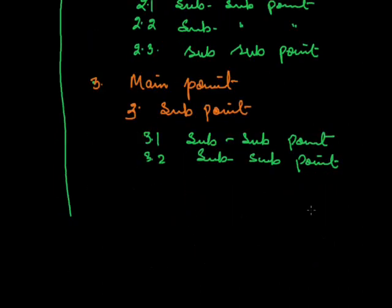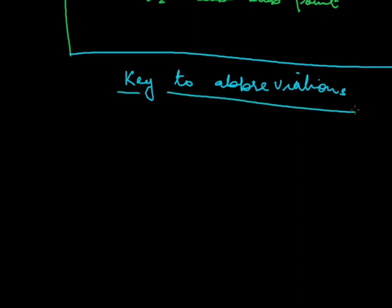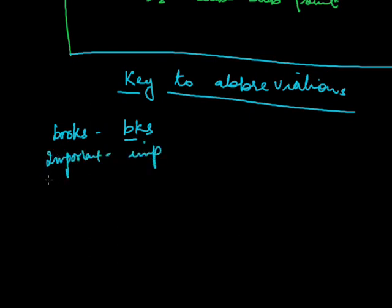After completing your notes, you should write 'Key to Abbreviations'. The abbreviations you have used, you must give a key for them. For example, if you have written 'BKF' it stands for 'books'; 'IMP' stands for 'important'. Likewise, you can use your own abbreviations.